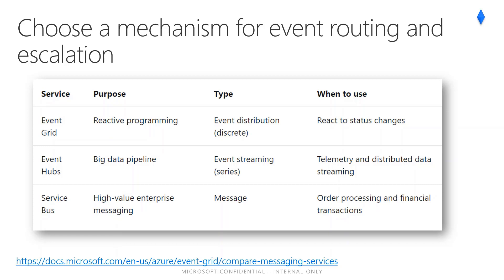Service Bus is intended for traditional enterprise applications. These enterprise applications require transactions, ordering, duplicate detection, and instantaneous consistency. Service Bus enables cloud-native applications to provide reliable state transition management for business processes. When handling high-value messages that cannot be lost or duplicated, use Azure Service Bus. Service Bus also facilitates highly secure communication across hybrid cloud solutions and can connect existing on-premises systems to cloud solutions. Characteristics include: reliable asynchronous message delivery, enterprise messaging as a service that requires polling, advanced messaging features like FIFO (first-in, first-out), batching/sessions, transactions, dead lettering, temporal control, routing and filtering, duplicate detection, at least once delivery, and optional in-order delivery.